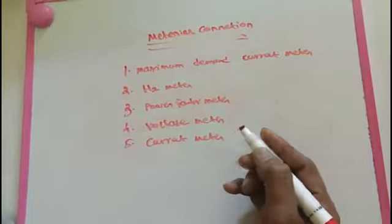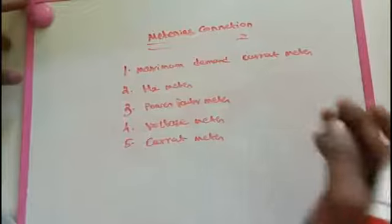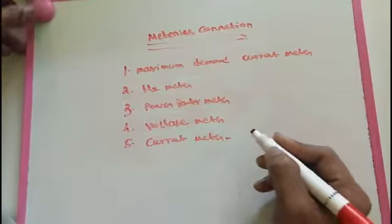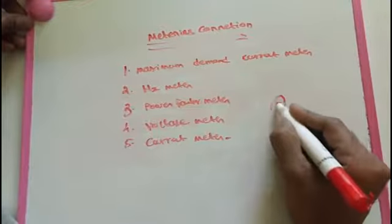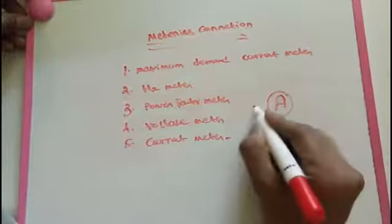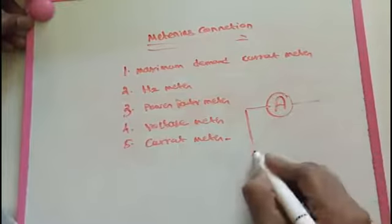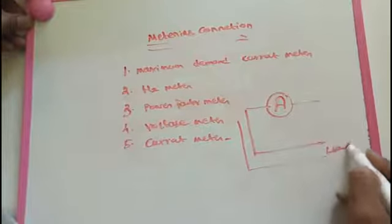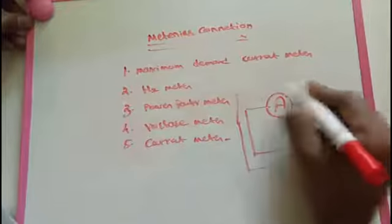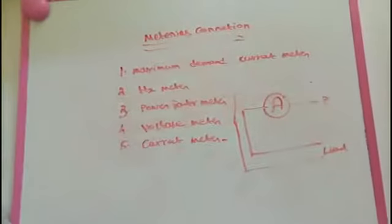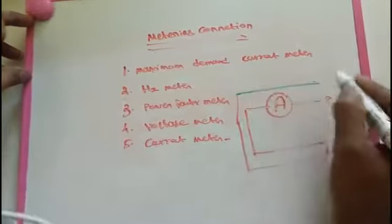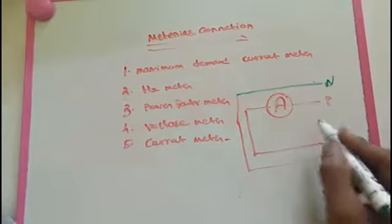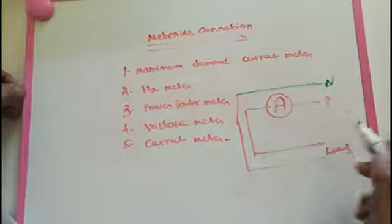These are the meters commonly used for electrical monitoring systems. Now the first one is the current meter — the ammeter. We connect the current meter in series like this. If we have any loads, here are the phases — phase, phase, phase — and one neutral. We put the ammeter in series between the line.